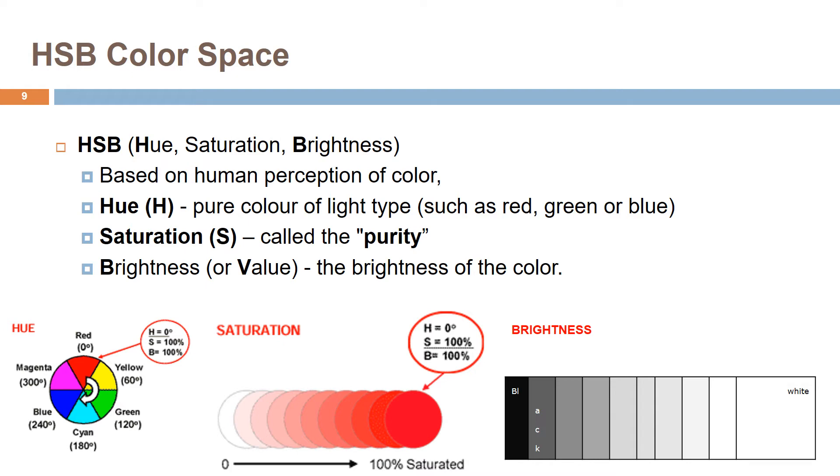Brightness or value is the brightness of the color. It ranges from 0 to 100%, where 0 is always black, depending on the saturation, and 100 may be white or a more or less saturated color.